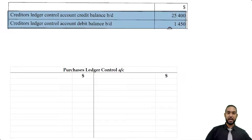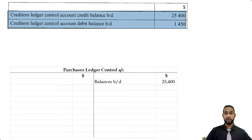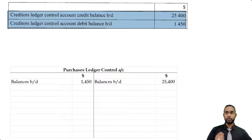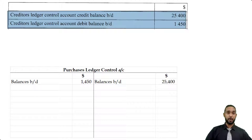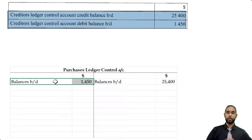The first two items are the opening balances: creditors ledger control account credit balance brought down 25,400, and creditors ledger control account debit balance brought down 1,450. We put the credit balance on the credit side and the debit balance on the debit side. The purchases ledger control account, also known as the creditors control account, is the summary account of all trade creditors. Creditors are classified as a liability and liabilities have credit balances at start — that's the regular balance. The debit balance is irregular, occurring when we overpaid our creditors or they owe us a refund.